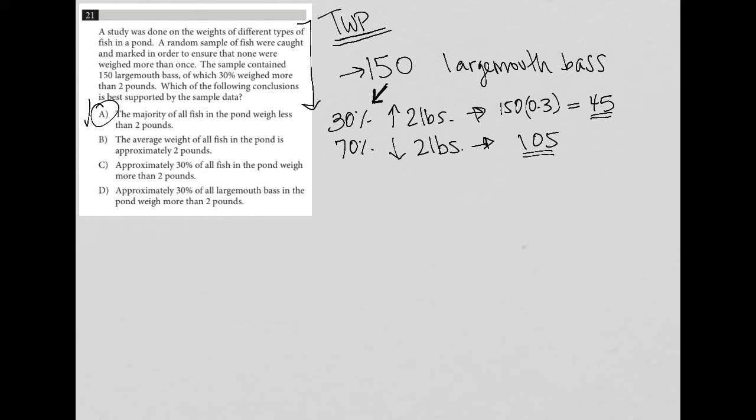Choice B says the average weight of all fish in the pond is approximately two pounds. That's definitely not true - that's only about 30 percent of the fish, and even that 30 percent is greater than two pounds, not exactly two pounds. So B is out.